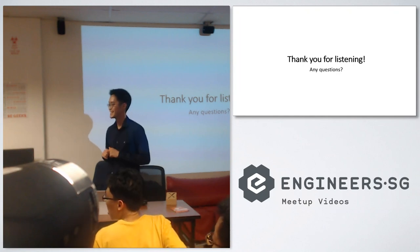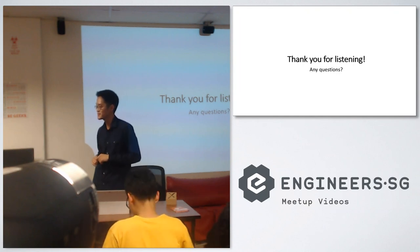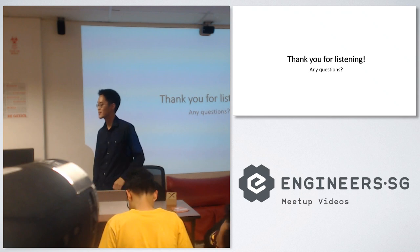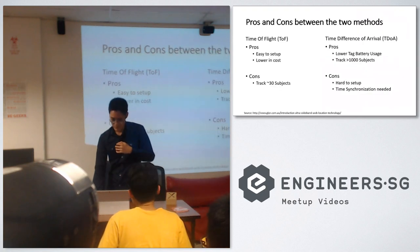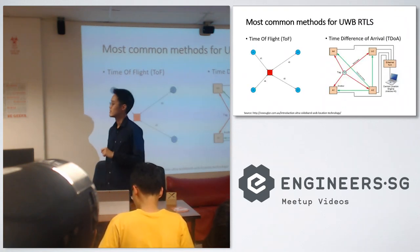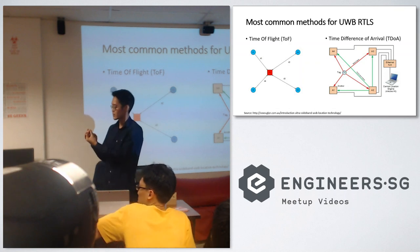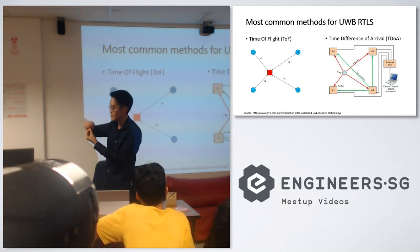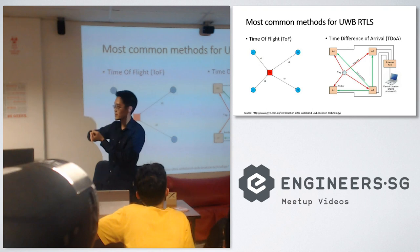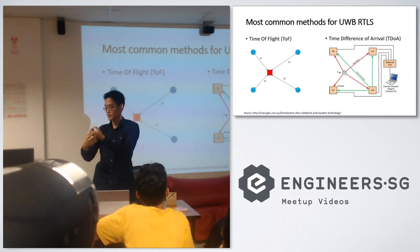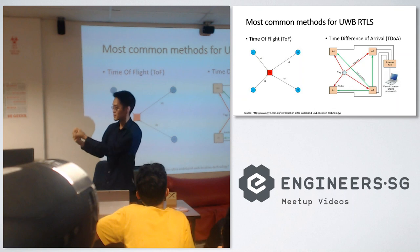Question: You mentioned the need for infrastructure for TDOA — how much infrastructure is required? Answer: For Time of Flight, the tag ranges the anchor, then the next anchor, then the next anchor — time synchronization doesn't matter. So I might say I'm 10 meters from here, 5 meters from you, 3 meters from you, and from that I estimate I'm in this position.